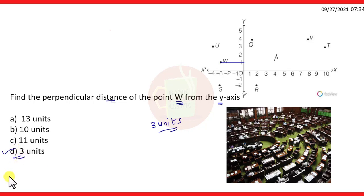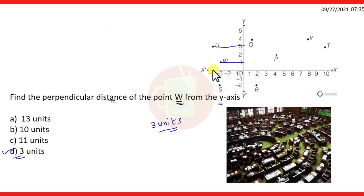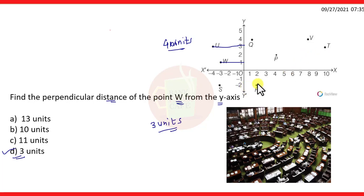For example, if you have to find the perpendicular distance of point U from the Y axis, even though the X coordinate is minus 4, the distance is written as 4 units — not minus 4. If you have to write the X coordinate, then it is minus 4. Remember: when writing distance, it will always be positive — you do not consider the negative sign.